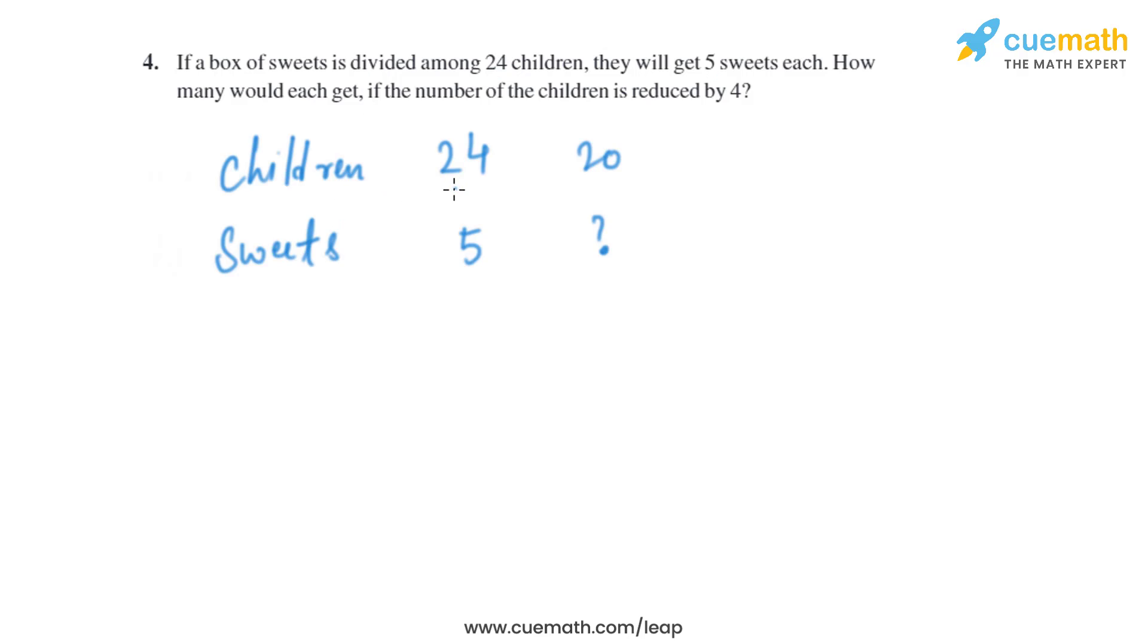It is given in the question that the number of children are 24 and each one is getting 5 sweets. When we decrease the number of children by 4, it will become 20 children and the number of sweets will increase per person, which means they are in inverse proportion.